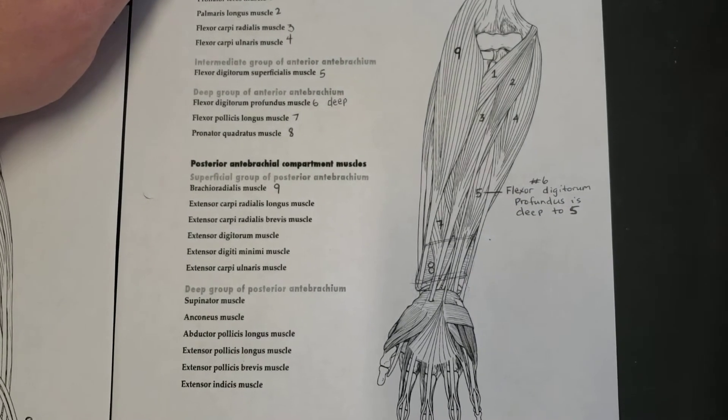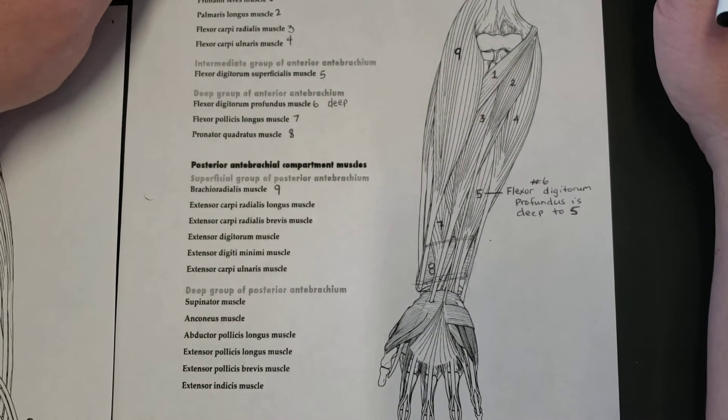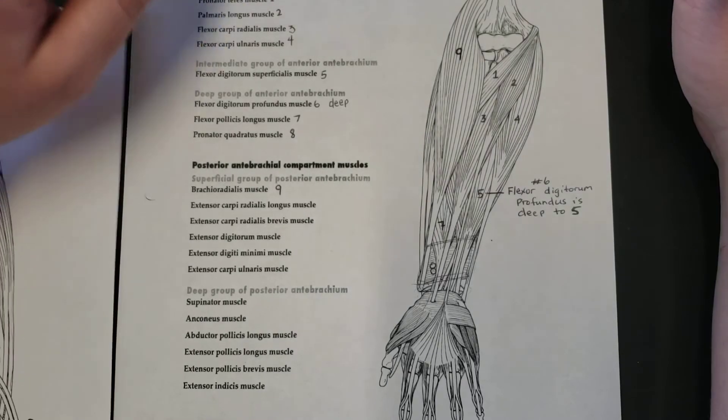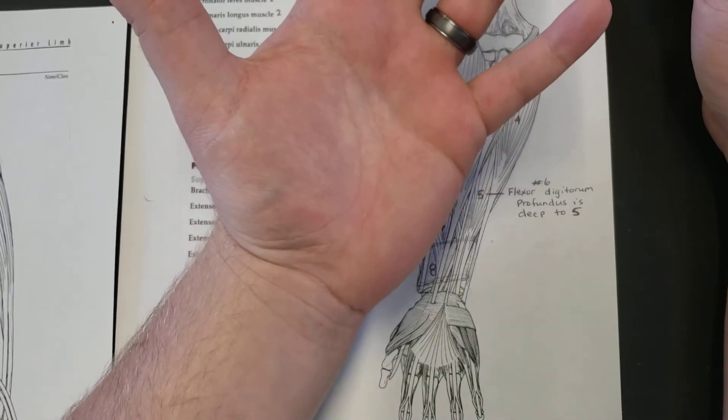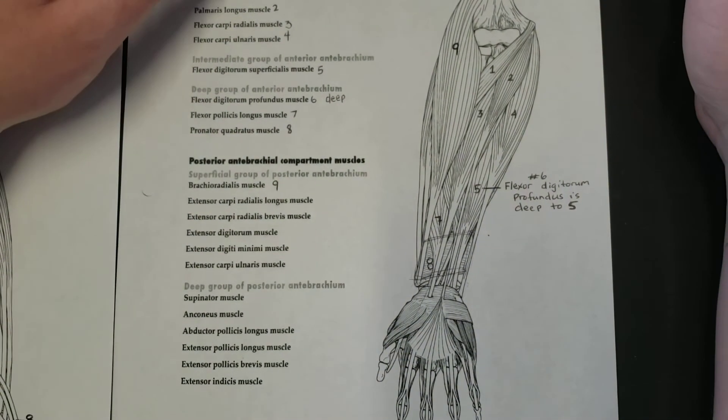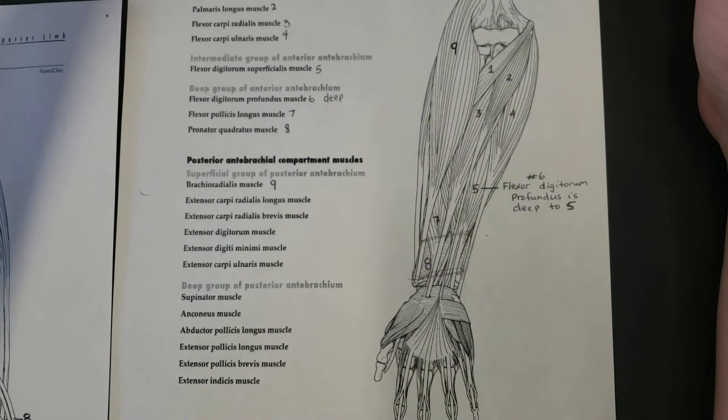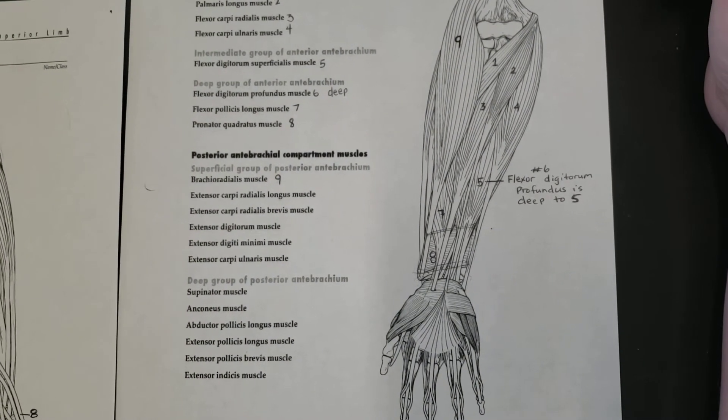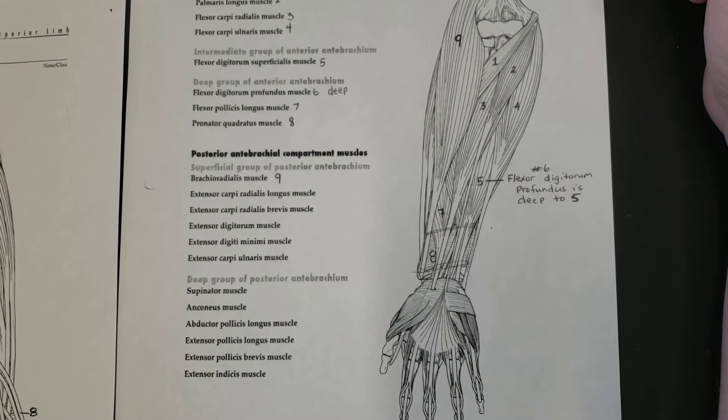It does flexion of the wrist. If you were to flex or contract that muscle you would flex your wrist. Number three is the flexor carpi ulnaris muscle.